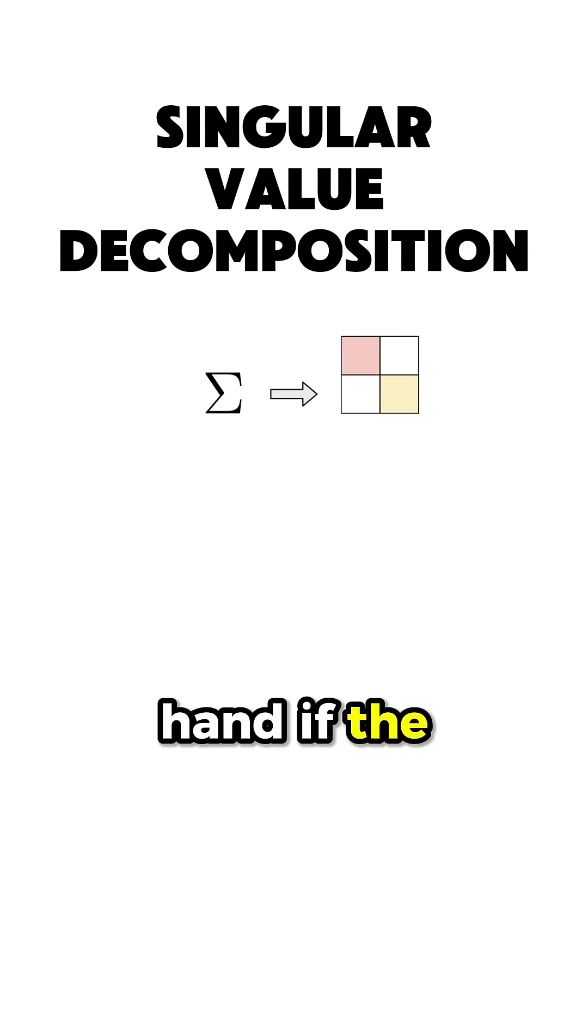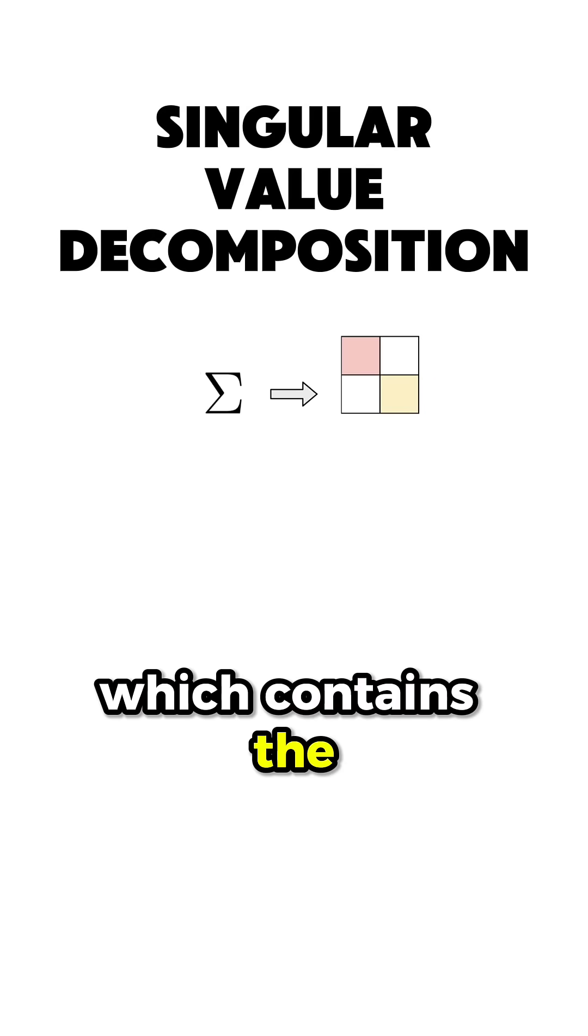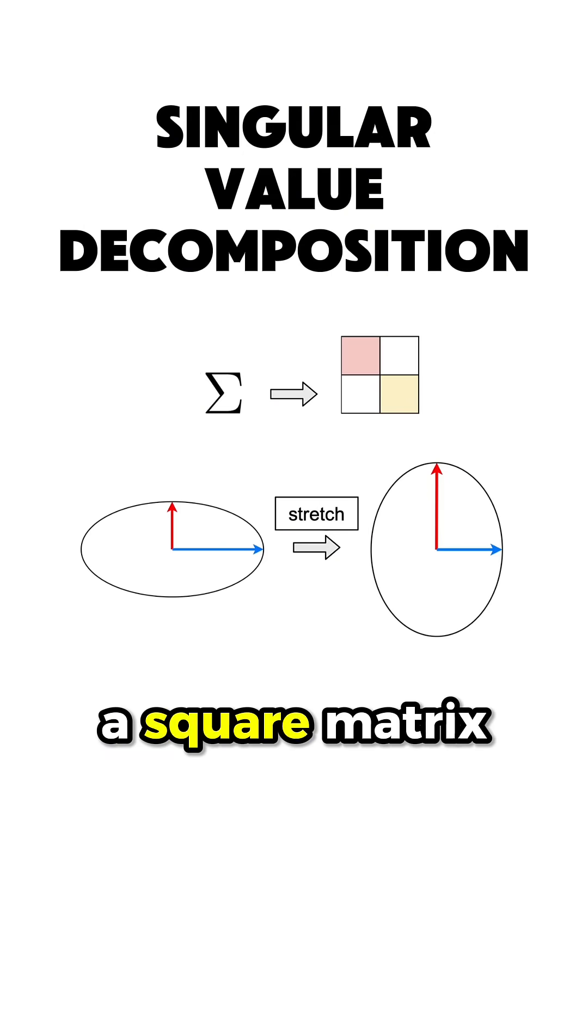On the other hand, if the matrix sigma which contains the singular values of A would have been a square matrix, then it would simply represent a stretch of the singular vectors.